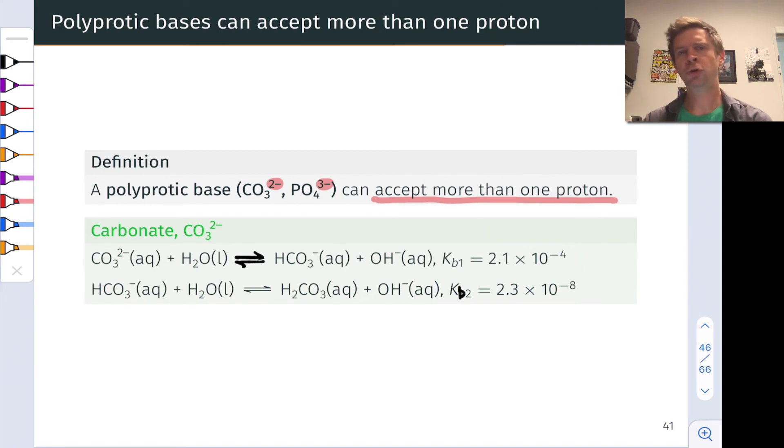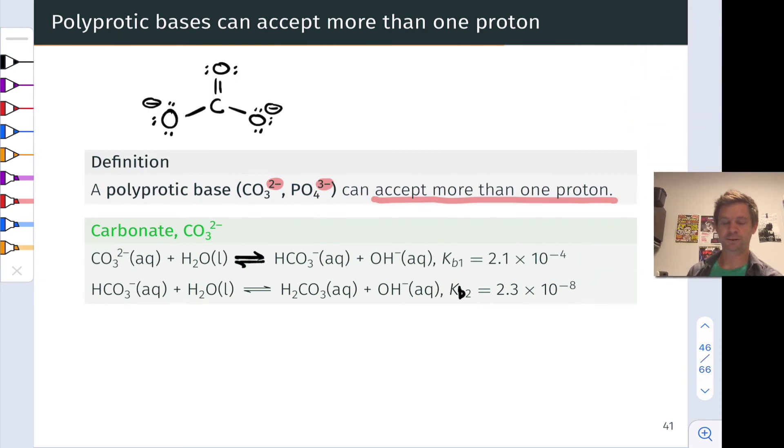So to show you the structural origin for polyprotic bases, let's dig into carbonate anion a little bit. So here's carbonate, CO32-. This is a Lewis structure for carbonate. It's got two oxygen atoms with negative charge in this Lewis structure. Each of those can individually accept a proton, making this a diprotic base. It has the capacity to accept two protons.